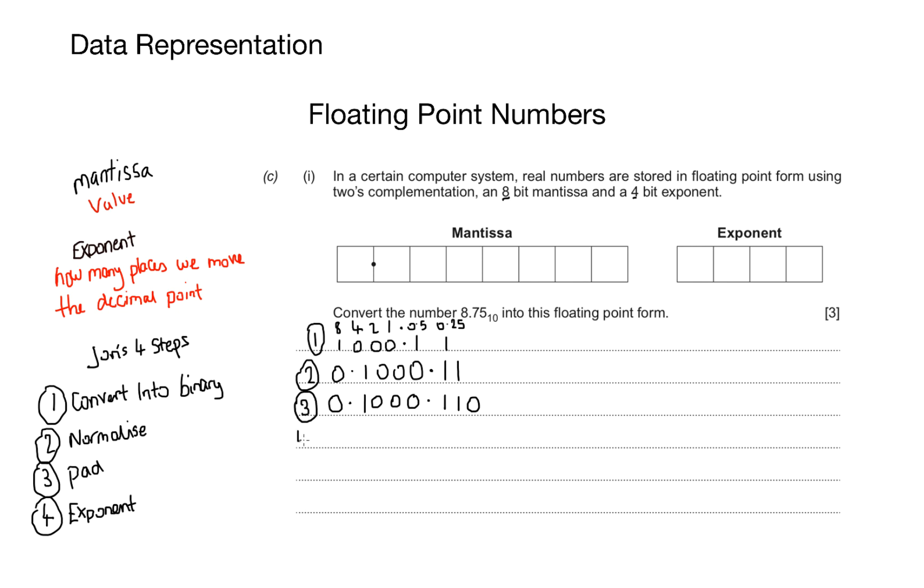Step four, to work out the exponent, I need to see how many places my right-hand decimal point needs to move in order to get to the normalized position. It travels one, two, three, four places, and I have a 4-bit exponent to represent the number 4. That comes out as 0100. And once I've got those two mantissa and exponent, all I need to do is write them in the box provided. My final answer should be 01000110 with an exponent of 0100.